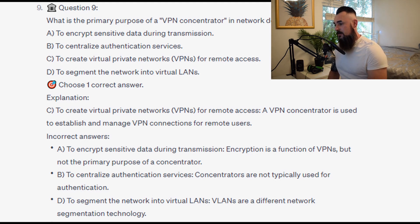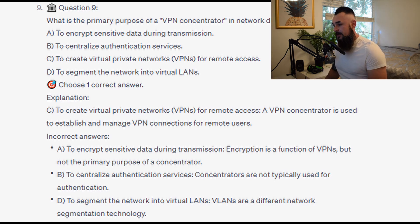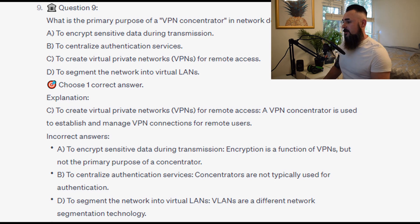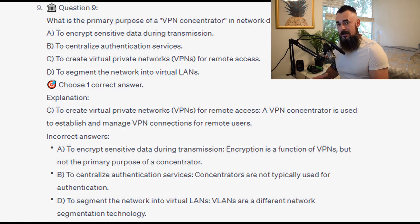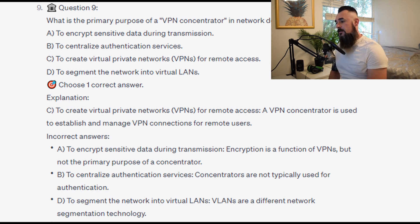For the incorrect answers: A — to encrypt sensitive data during transmission — encryption is a function of VPNs, but not the primary purpose of a concentrator. B — to centralize authentication services — concentrators are not typically used for authentication. D — to segment the network into virtual LANs — VLANs are a different network segmentation technology.